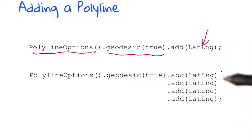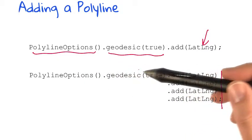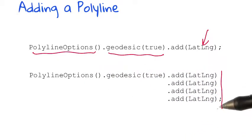You can stack these adds into a single call, as you can see here, where my PolylineOptions().geodesic(true), I just add LatLng, add another one, add another one, and add another one. This makes your code a little bit easier to read and a little bit easier to manage.